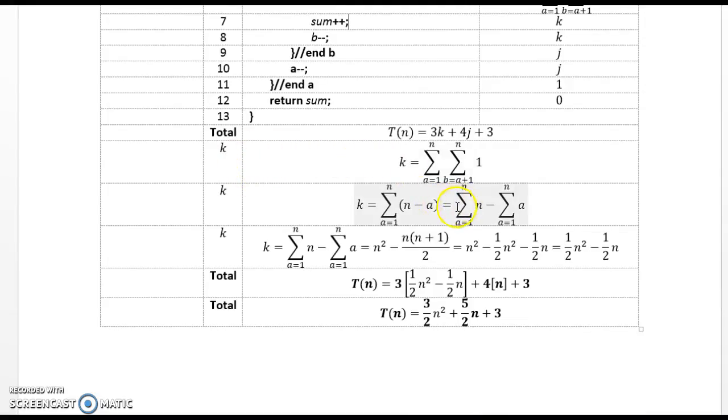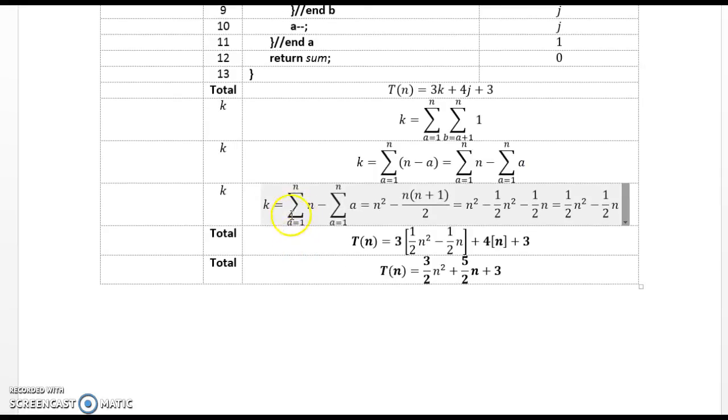So to compute k, first we evaluate the inner loop, and so what we have is the bottom is a plus 1, and the top is n, but it's inclusive. So it's n minus the quantity a plus 1, plus 1, to include both n's, and so what we come out with is k is the sum from a equal 1 to n, of n minus a, which we can split apart into the sum from a equal 1 to n, of n, minus the sum from a equal 1 to n, of a.